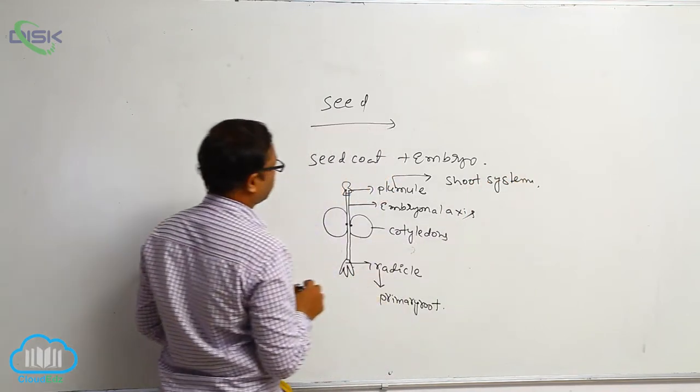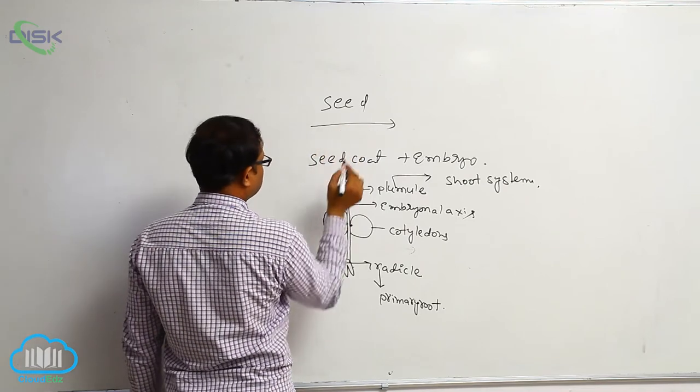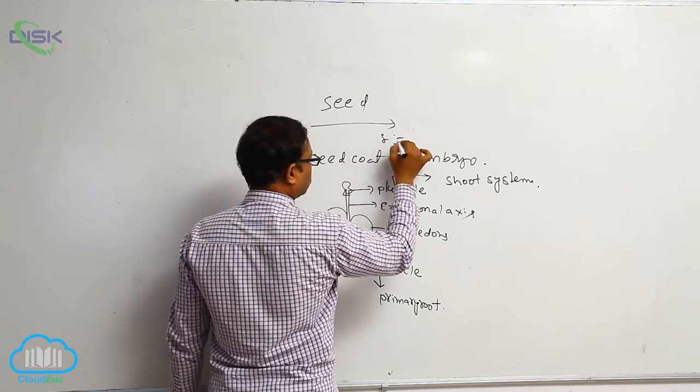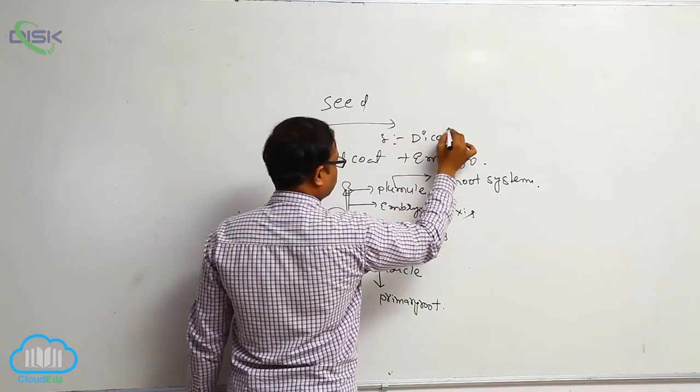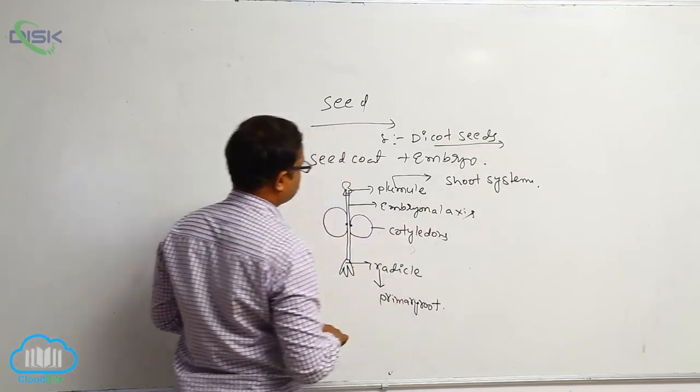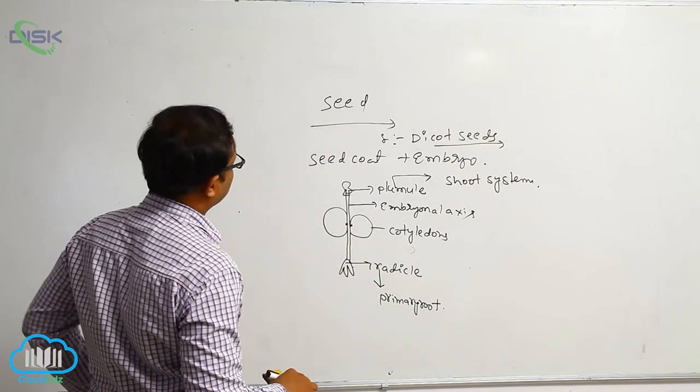That is the seed. This seed belongs to this type of seed, example: dicot seeds. That is known as the seed structure.